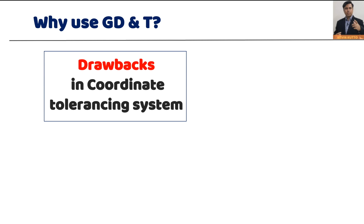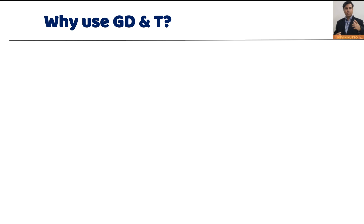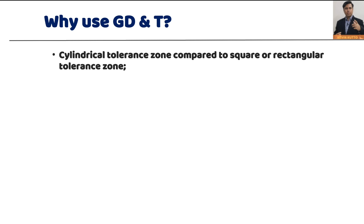Obviously there are some drawbacks in the coordinate tolerancing system, which is why we need a new system. The first drawback is in the tolerance zone itself. In coordinate tolerancing we have a rectangular or square tolerance zone, while in GD&T we have a circular or cylindrical tolerance zone. Let's see with an example what difference this makes.